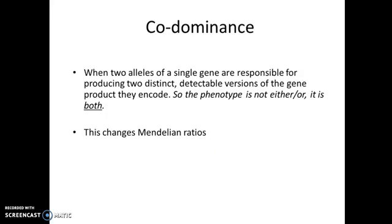Codominance can be defined as when two alleles of a single gene are responsible for producing two distinct detectable versions of the gene product they encode. The phenotype in that case is not either/or — it is both. And the AB blood type is a classical example of codominance.